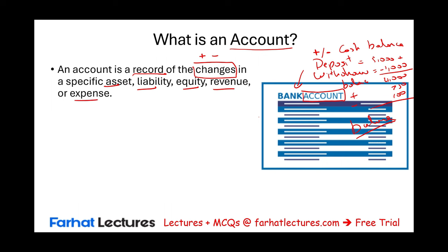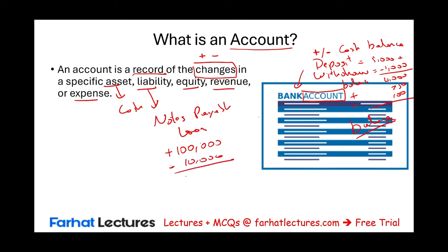In the case of cash, cash is an asset, but we don't keep track of cash alone. We keep track of all assets like accounts receivable, supplies, land, and inventory. We keep track of liabilities — for example, notes payable, which is a loan. When we borrow one hundred thousand dollars we increase notes payable, then as we pay it back ten thousand at a time we reduce the balance. The account keeps track of the balance the same way for equity, revenues, and expenses.